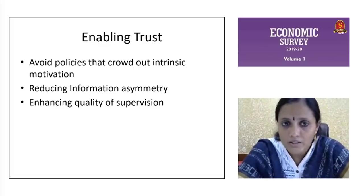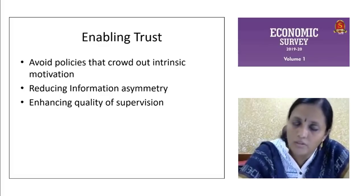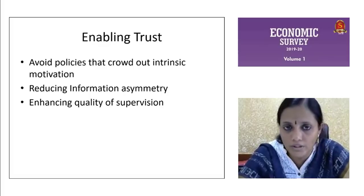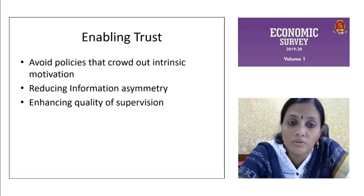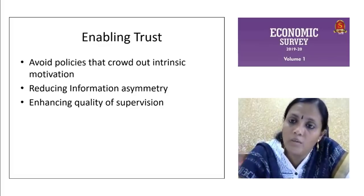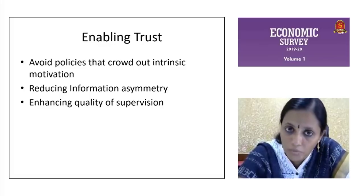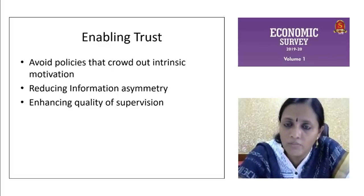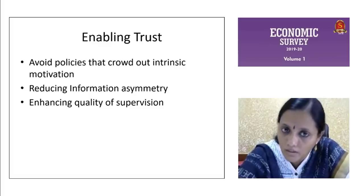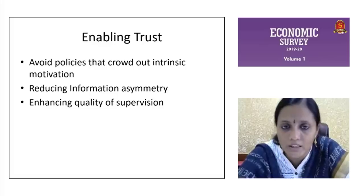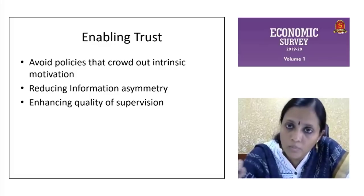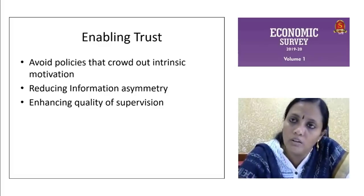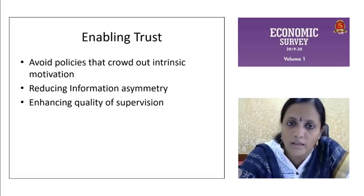The second thing is reducing information asymmetry. If there is transparency in the process — running the corporate sector, the banking system, anything — and if the information between producers, consumers, creditors, and everybody is clear, then this kind of breaching of trust will not happen. The last thing is enhancing quality of supervision. Making more data available and more transparency in the data of the corporate, banking, and government sectors will reduce information asymmetry. The government's role is expected mainly in regulatory and supervisory work — identifying problems at the right time so that these kinds of issues with the private sector will not arise.